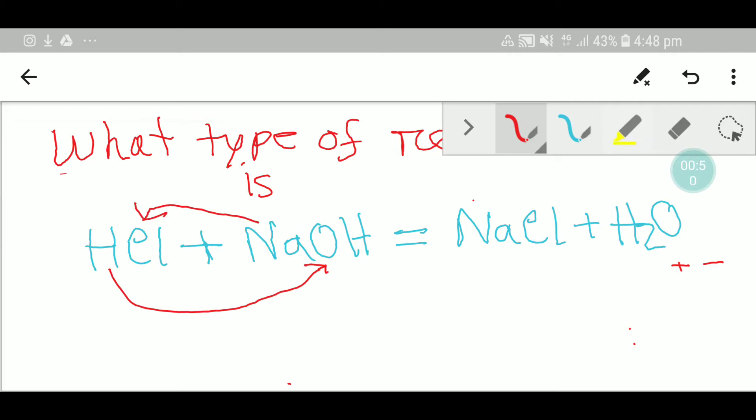So this is the reaction like this: AB plus CD. A will go with D so we get AD, plus C will go with B, so we'll get CB.